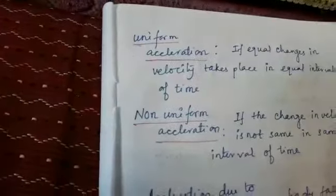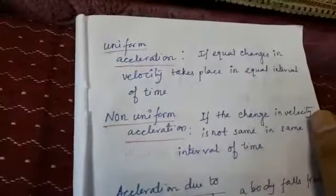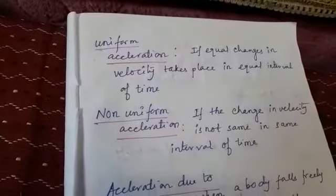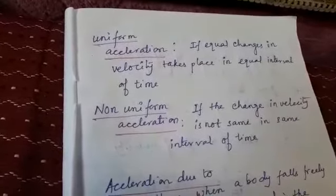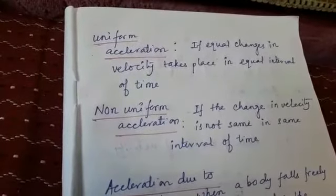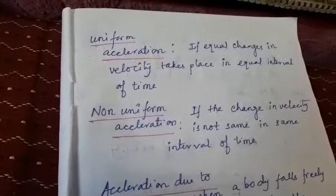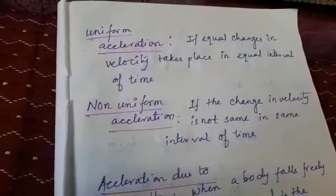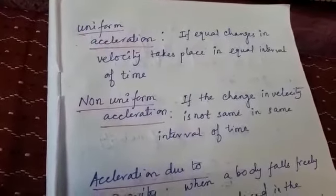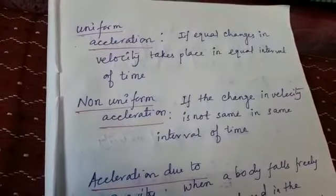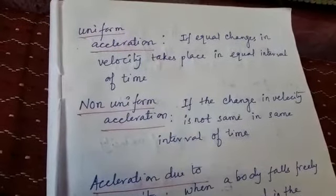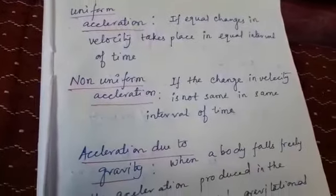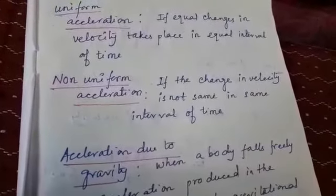Next is uniform acceleration. Uniform acceleration is when equal change in velocity takes place in equal time intervals. For example, if you throw a stone it will fall under gravity, and there will be equal change in velocity in every equal time interval — that is uniform acceleration.